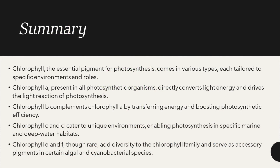Let us conclude this video by revising the topics we covered. Chlorophyll, the essential pigment for photosynthesis, comes in various types, each tailored to specific environments and roles. Chlorophyll A, present in all photosynthetic organisms, directly converts light energy and drives the light reactions of photosynthesis. Chlorophyll B complements chlorophyll A by transferring energy and boosting photosynthetic efficiency. Chlorophyll C and D cater to unique environments, enabling photosynthesis in specific marine and deep-water habitats. Chlorophyll E and F, though rare, add diversity to the chlorophyll family and serve as accessory pigments in certain algae and cyanobacterial species.